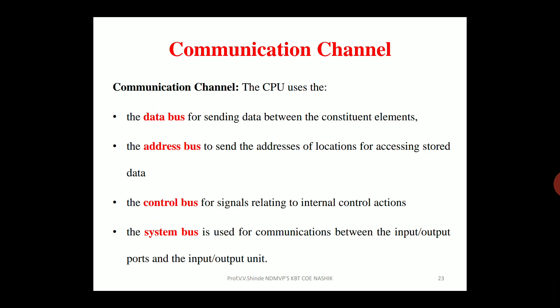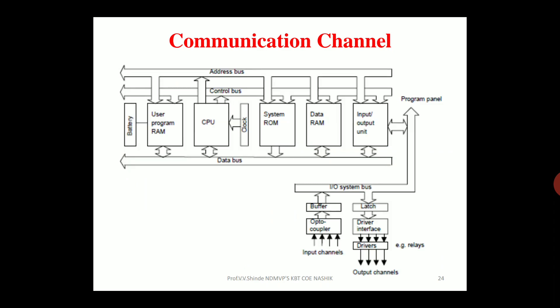Communication channels describe how communication takes place between the different elements of the PLC, and this is done with the help of buses. There are four types: the data bus, used for sending data between constituent elements; the address bus, used to send addresses of locations for accessing stored data; the control bus, used for signals relating to internal control actions; and the system bus, used for communication between the input/output ports and input/output units.